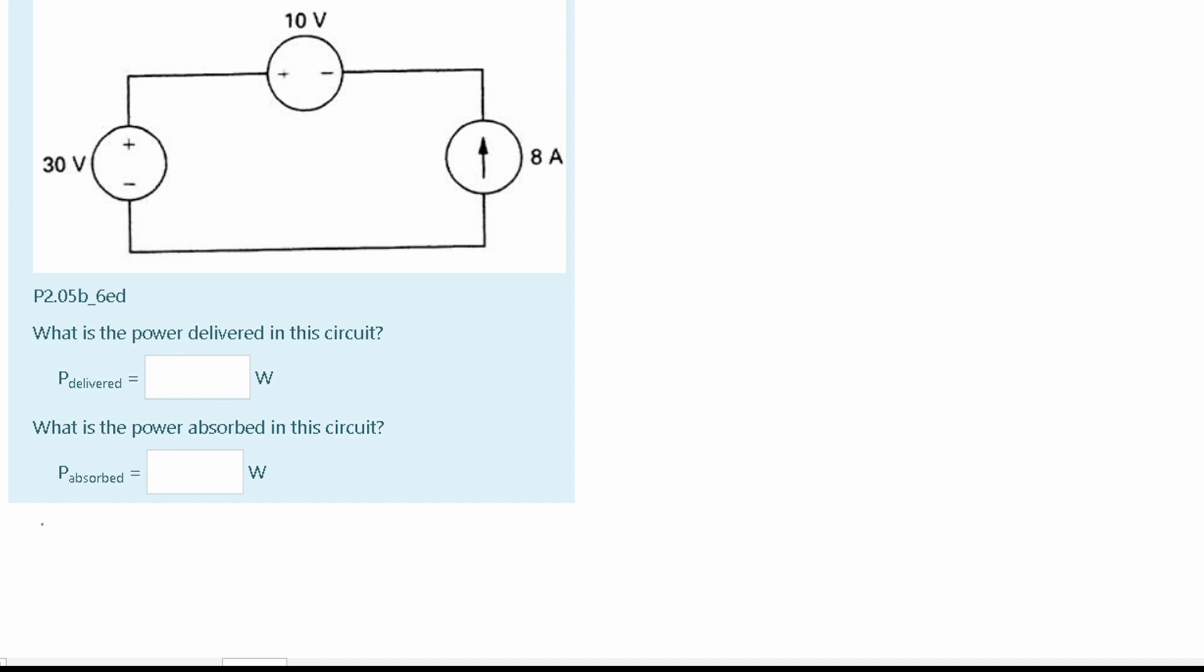Since we have multiple powers here, we're going to need to use the summation. We'll use the summation of our power being absorbed. This is a plus. And then we will also have the summation of our power being delivered, which is a negative. We're going to set this equal and finish these by putting values into them.